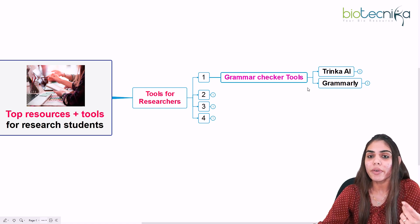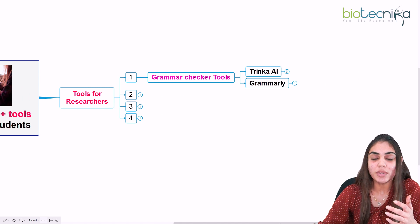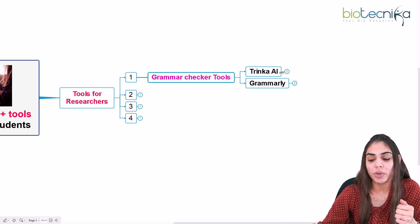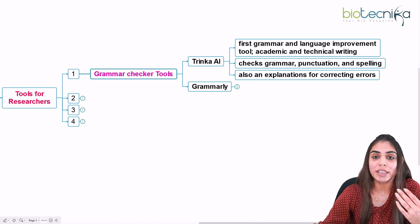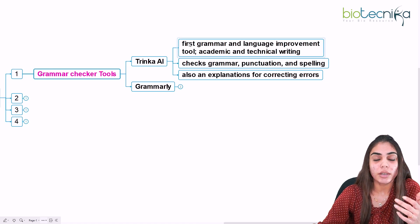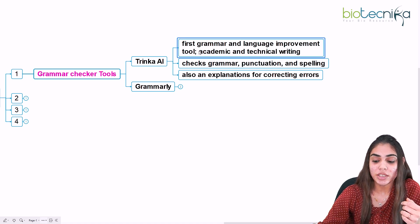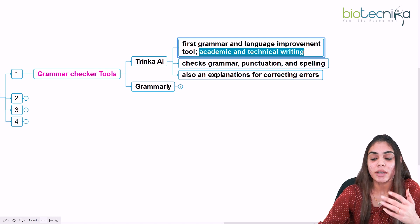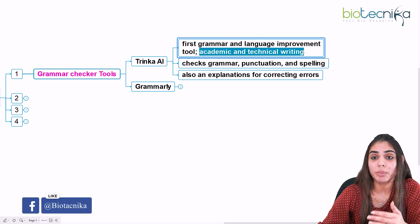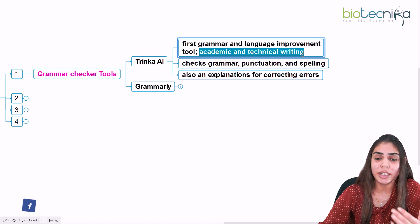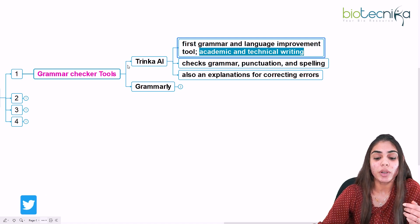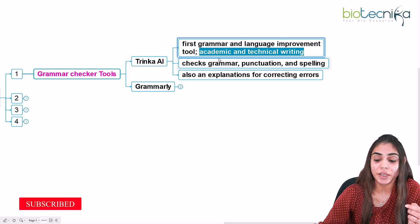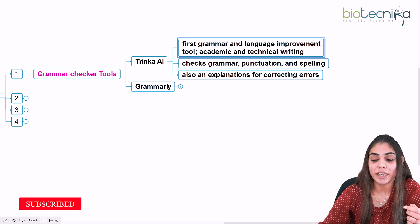The grammar check tools I'm covering are Trinka AI and Grammarly. Trinka AI is called the world's first grammar and language improvement tool for academic and technical writing. Suppose if you are writing your papers, you will need this kind of tool to check if there is any grammatical or spelling mistake in that sentence or paper.